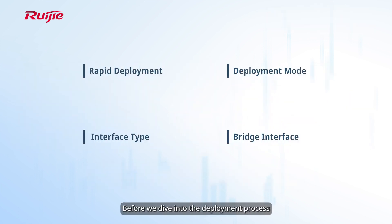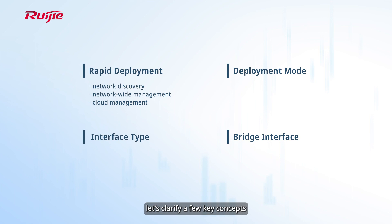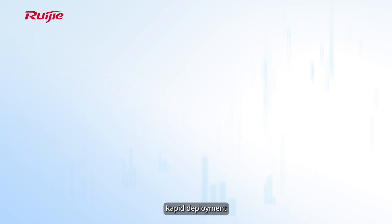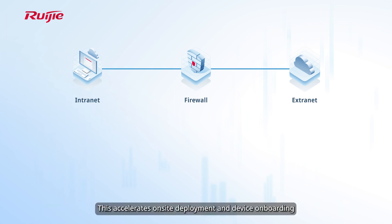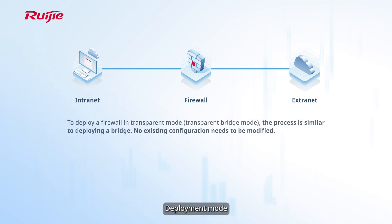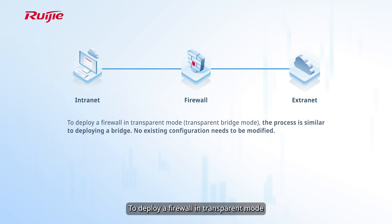Before we dive into the deployment process, let's clarify a few key concepts. Rapid deployment allows you to quickly add a firewall on the live network using the network discovery function, which accelerates on-site deployment and device onboarding. Deployment mode specifies where the firewall is installed. To deploy a firewall in transparent mode, the process is similar to deploying a bridge.